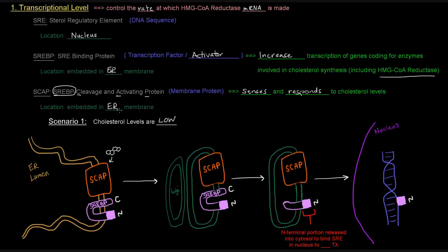And it can cleave and activate SREBP because the cholesterol levels are low, we need to make more. And we can make more by having an increase of transcription of the reductase gene, so that we can have more mRNA that we can translate into protein.